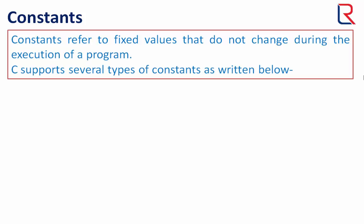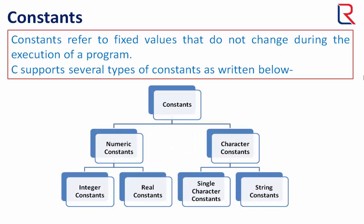Constants refer to fixed values that do not change during the execution of a program. C supports several types of constants as written below. Constants can divide into categories: numeric constants and character constants.